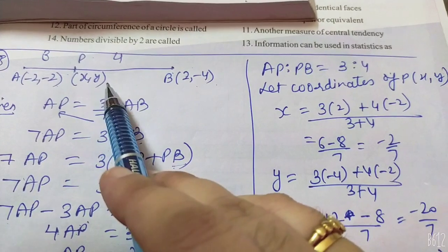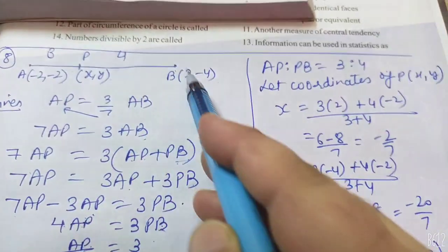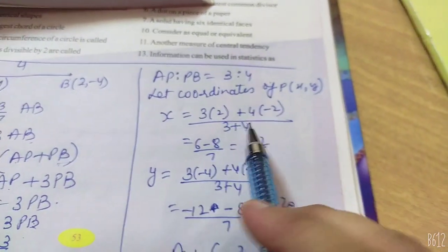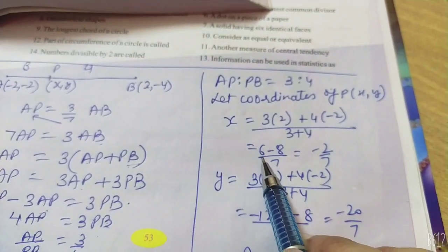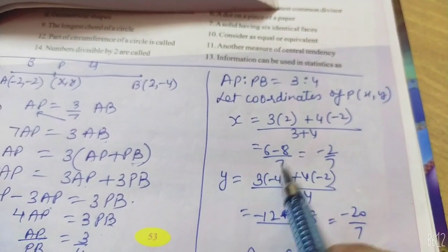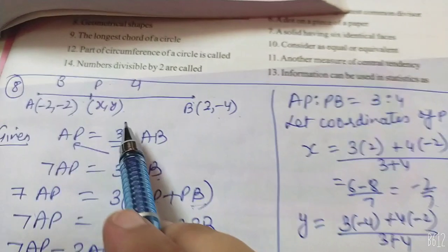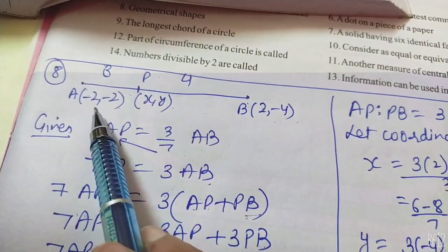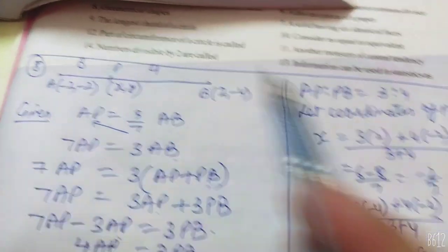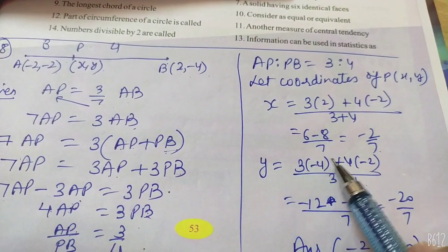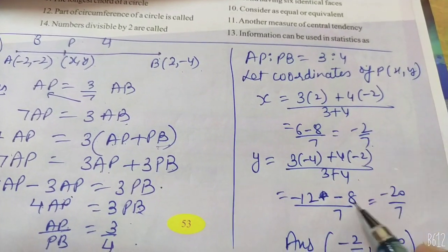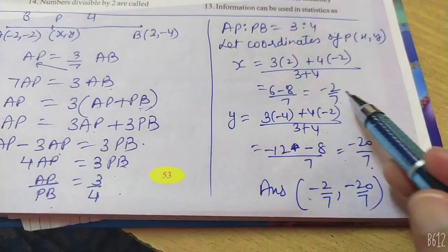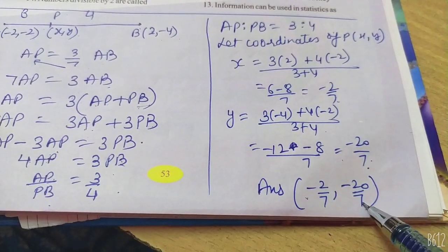अब X और Y निकालते हैं section formula से. X = (3×2 + 4×(-2)) / (3+4) = (6 - 8) / 7 = -2/7. Similarly Y निकालते हैं: 3×(-4) + 4×(-2) = -12 + (-8) = -20, denominator 3+4 = 7, so Y = -20/7. यानि P के coordinates आ गए: X = -2/7 and Y = -20/7.